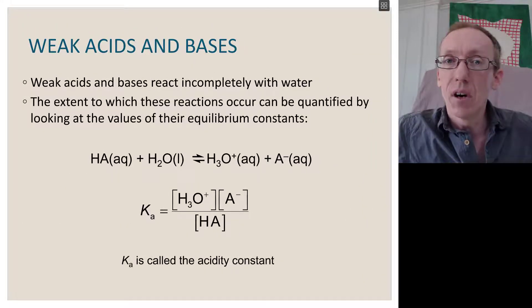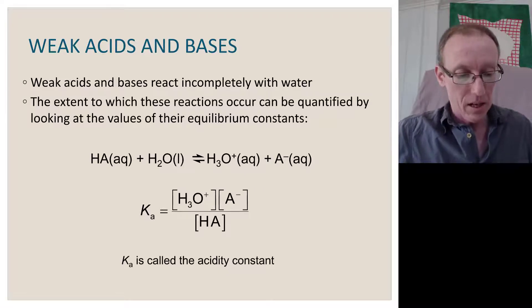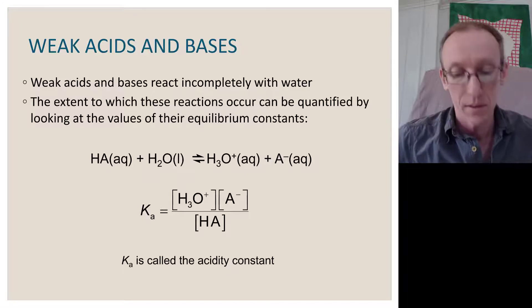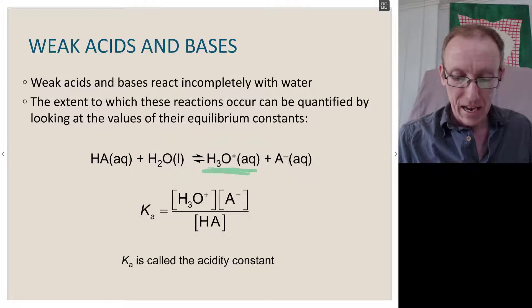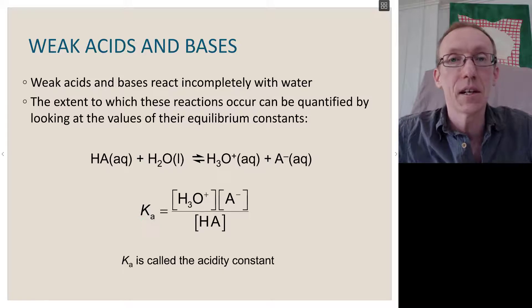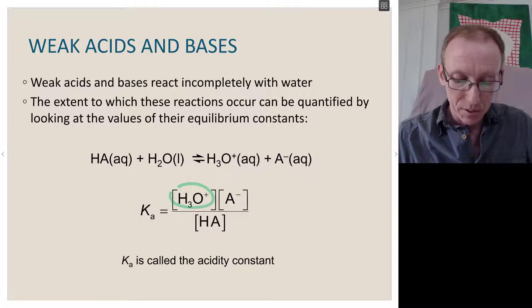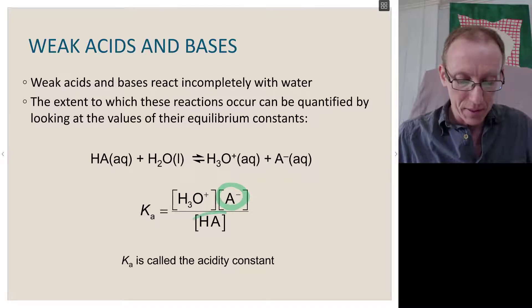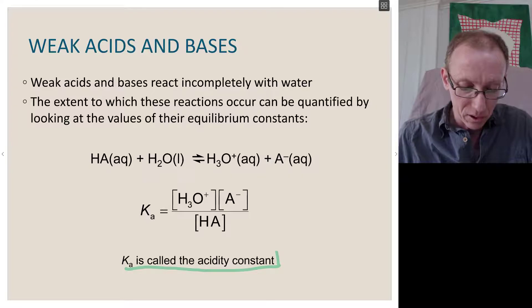When we add to an aqueous environment a weak acid or weak base, we change the pH. Weak acids and bases are defined as those that react incompletely with water. The extent to which the reaction occurs can be quantified by looking at the values of the equilibrium constants. If we have a weak acid, HA, in an aqueous environment, it can react with water to give us the hydronium ion, or H+, and the conjugate base of that acid, A-. The equilibrium constant for this reaction can be defined as the concentration of the hydronium ion times the concentration of the anion over the concentration of the undissociated weak acid. This Ka is called the acidity constant.